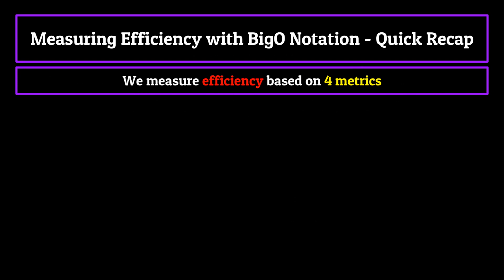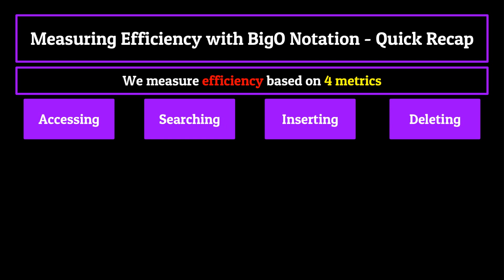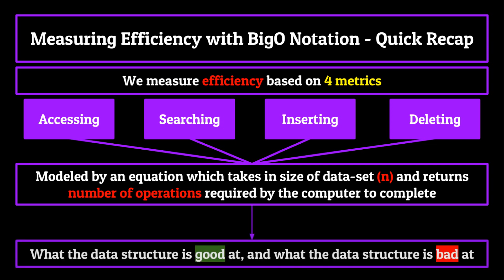To sum up everything so far, we measure the efficiency or speed of a data structure based on how well it can perform four simple tasks: accessing, searching for, inserting, and deleting elements within itself. Each of these criteria is modeled by an equation which takes in the size of the data structure in number of elements and returns the amount of operations needed to be performed by the computer before it is completed. By measuring these four things, we can get a pretty good understanding of what the data structure is good at and what the data structure is bad at.